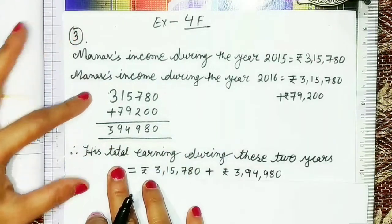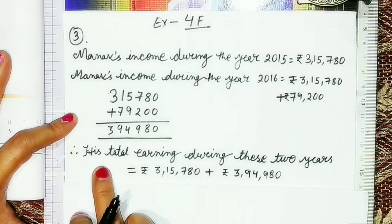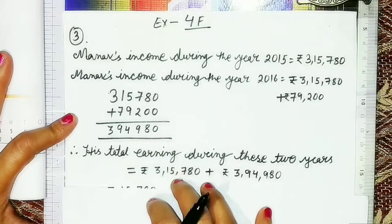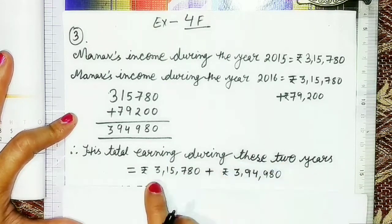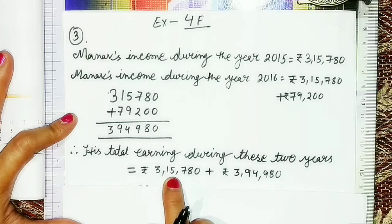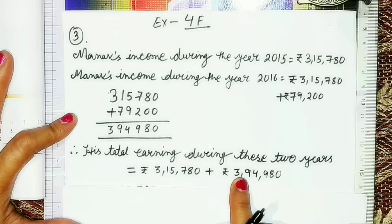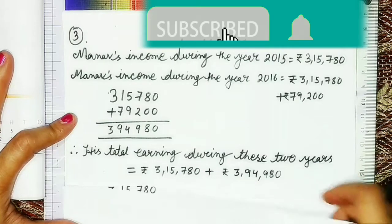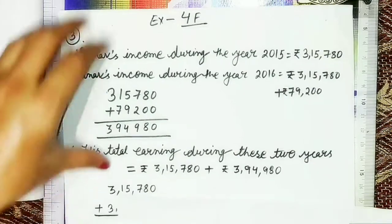After that, the next statement will be: we have to find his total earning during these two years, which will be equal to Rs. 3,15,780 plus Rs. 3,94,980. We will add these two terms.